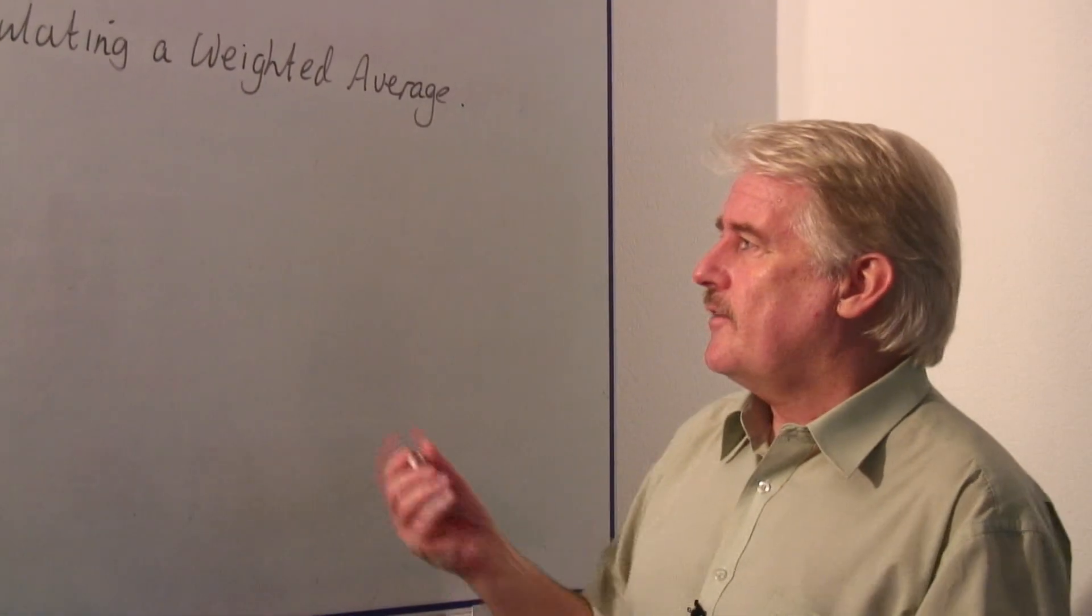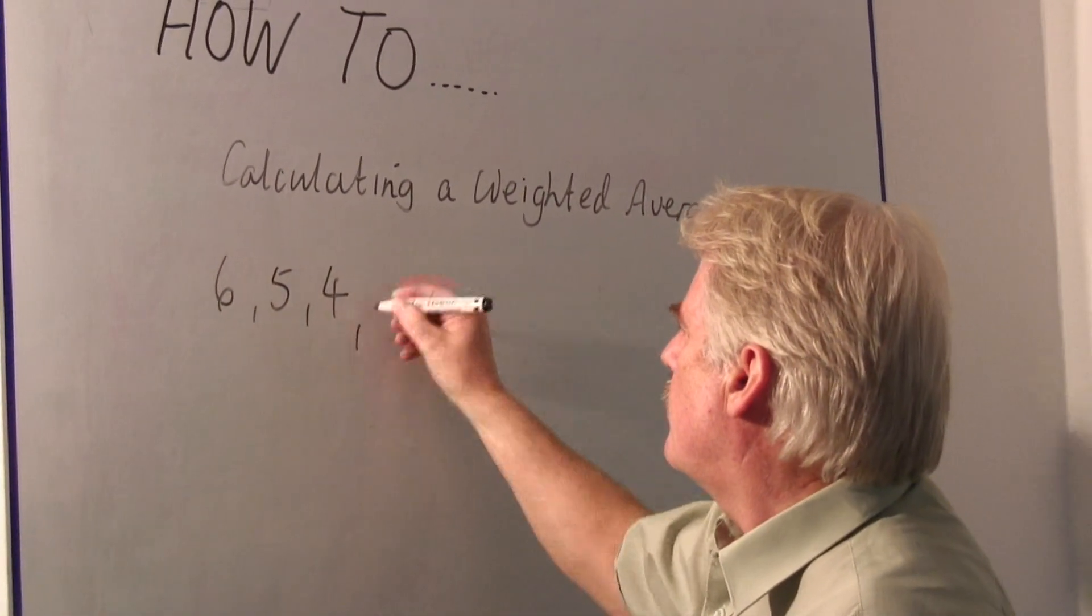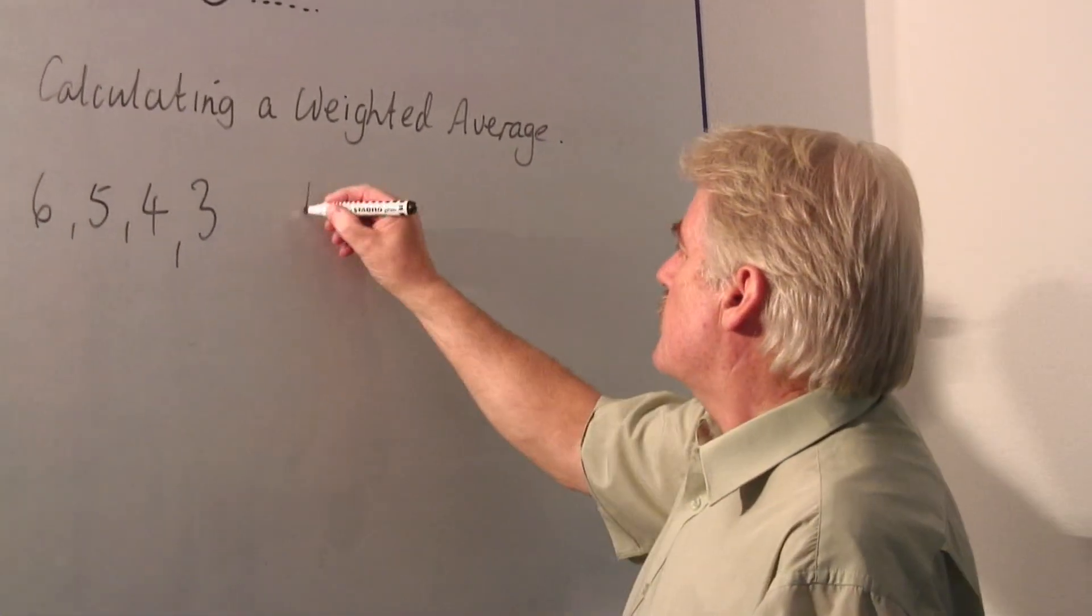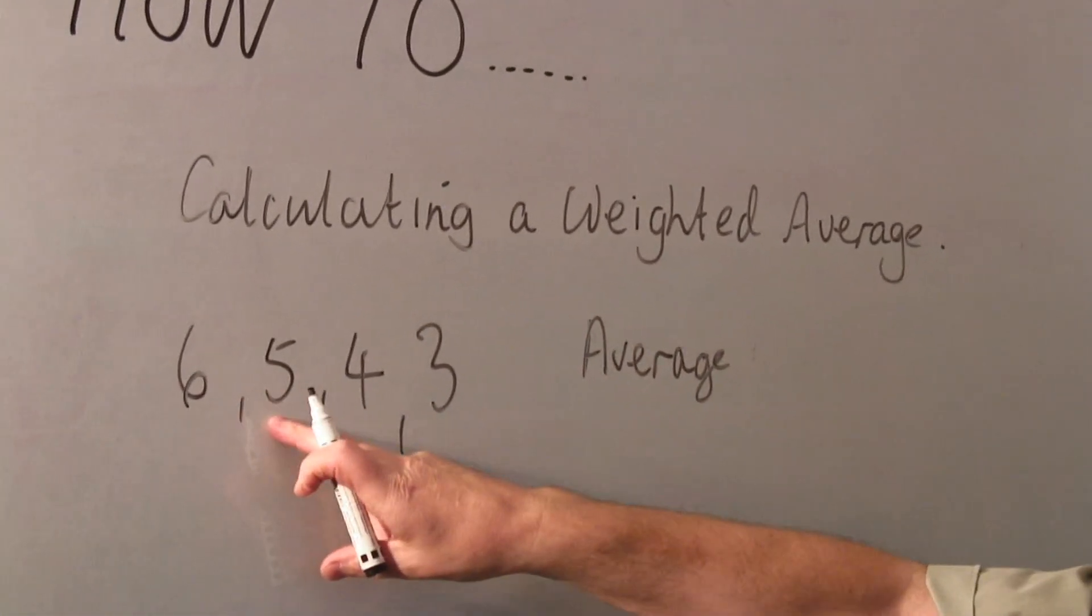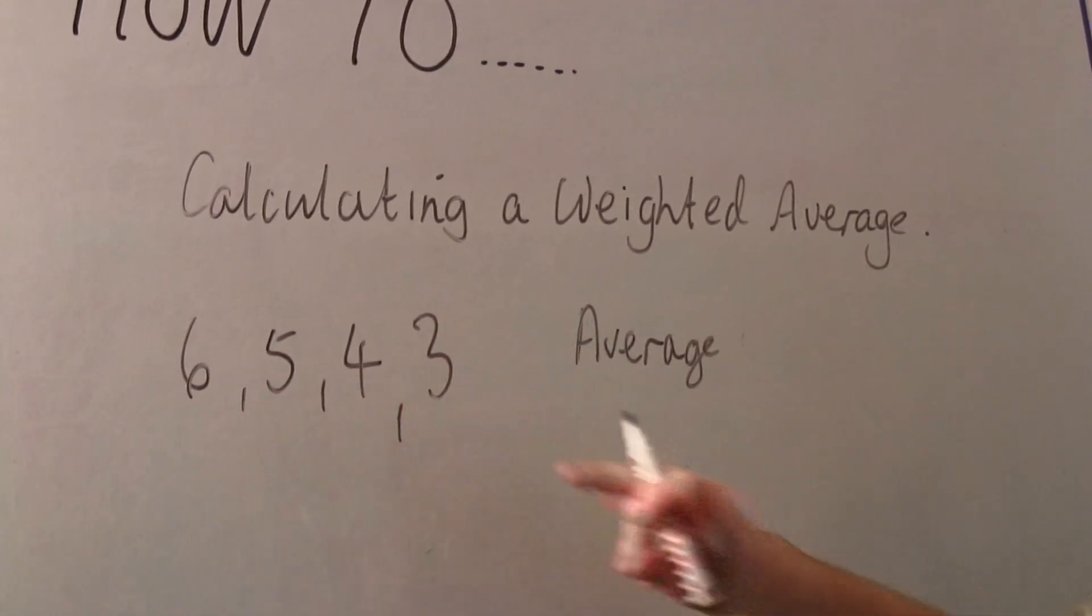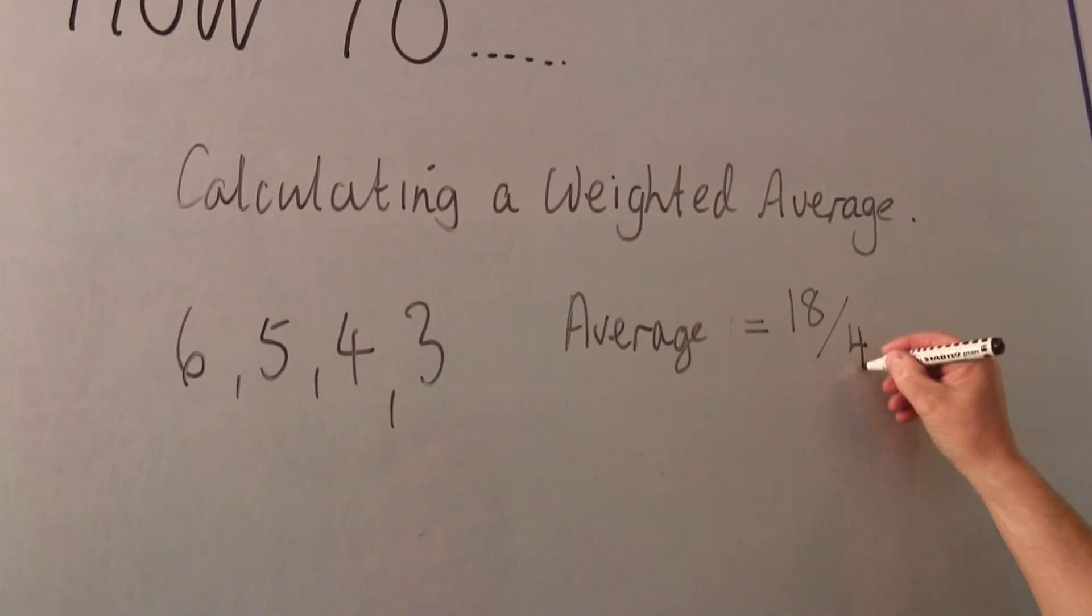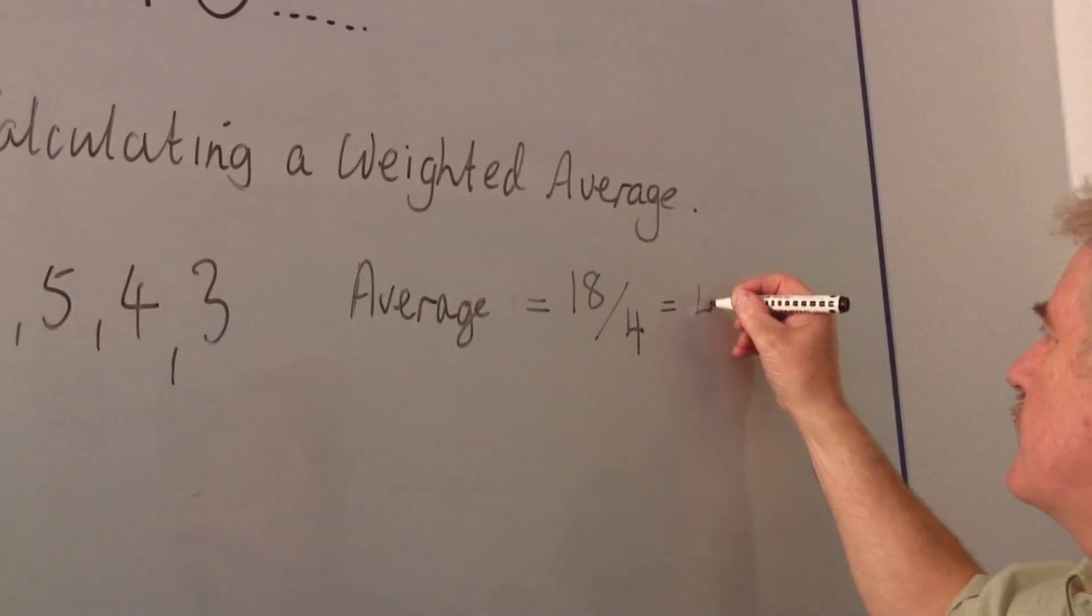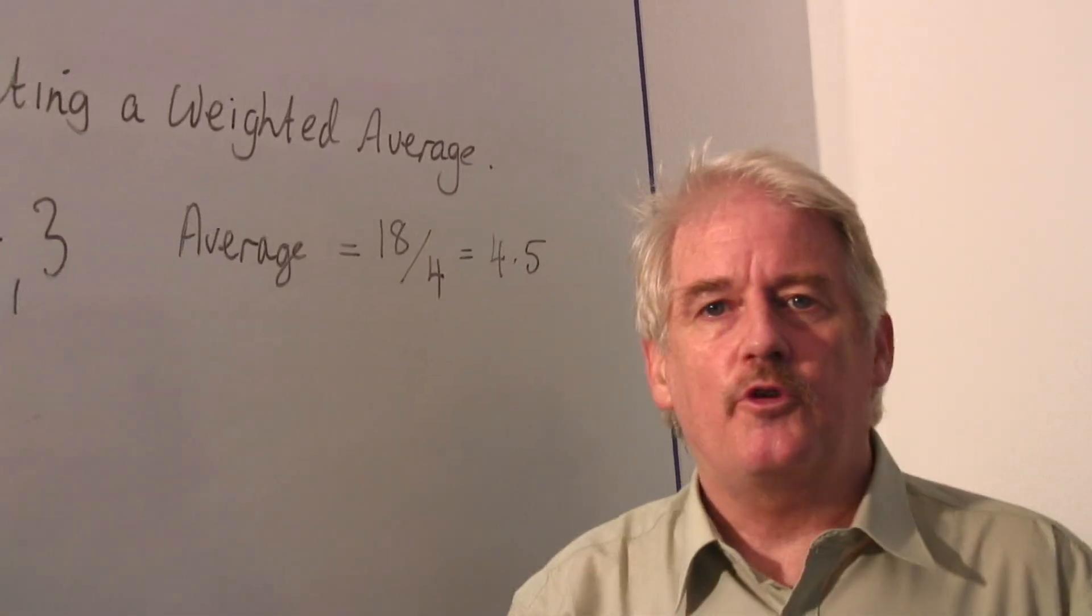Obviously if I gave you a list of numbers like six, five, four, three, I could work out the average. So the average of these numbers is six plus five plus four plus three. Five is eleven, fourteen, eighteen. And there are four numbers so it's eighteen divided by four. Now eighteen divided by four is of course four point five. So the average of those four numbers is four point five.